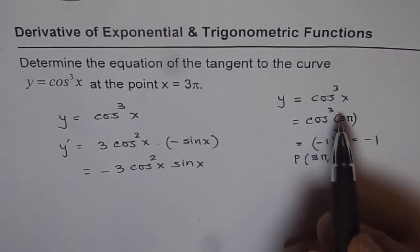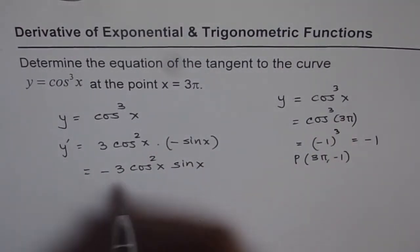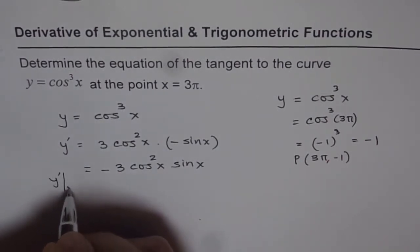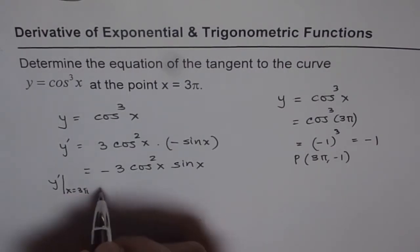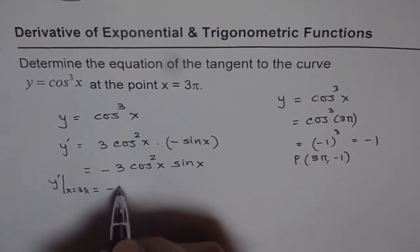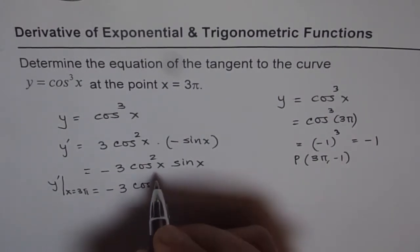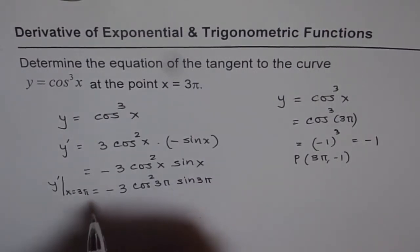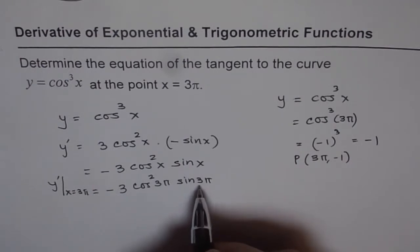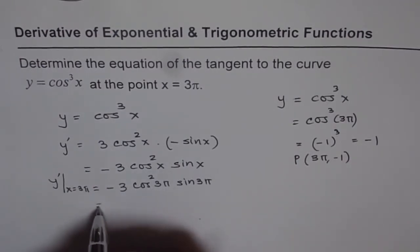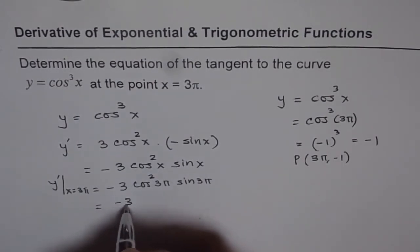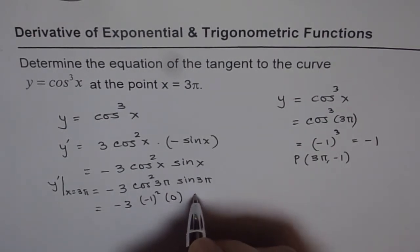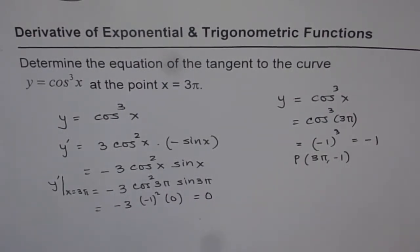Now at x = 3π, we can write y'|_{x=3π} = -3cos²(3π)sin(3π). Since sin(3π) = 0 and cos(3π) = -1, we have -3(-1)² · 0 = 0. So the slope is 0.